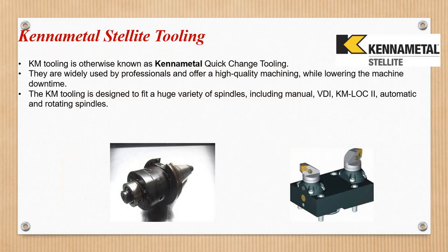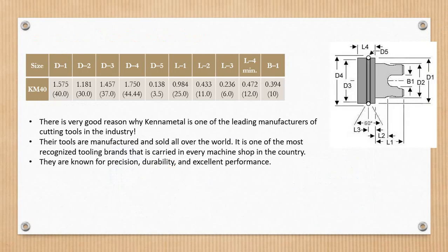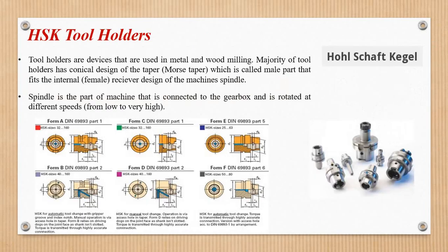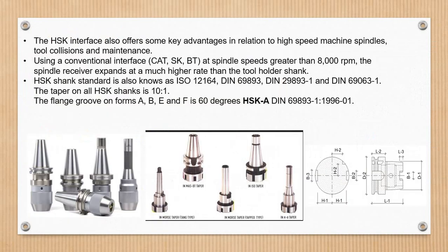Next is Kennametal — called KM tooling, a different standard. This is not just for milling machines — there are also drilling machines, jig boring machines, and hard angle boring machines. Different machine tools use HSK standard. HSK is called Direct — a small area inserted directly into the machine.